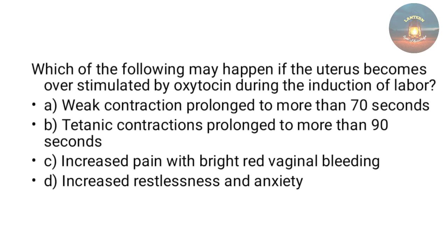Which of the following may happen if the uterus becomes overstimulated by oxytocin during induction of labor — weak contractions prolonged to more than 70 seconds, tetanic contractions prolonged to more than 90 seconds, increased pain and bright red vaginal bleeding, or increased restlessness and anxiety? The answer is tetanic contractions prolonged to more than 90 seconds. Hyperstimulation of the uterus causes tetanic contractions prolonged to more than 90 seconds.